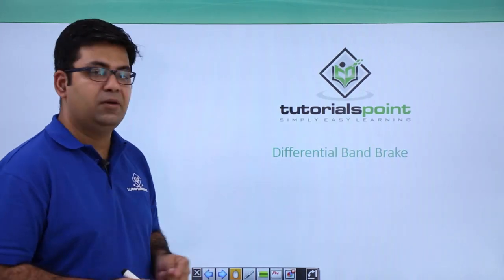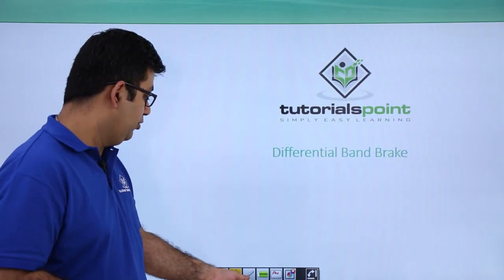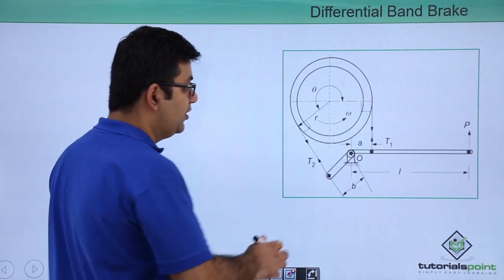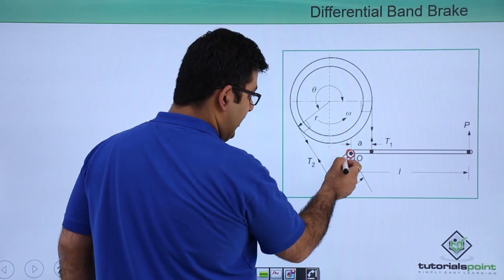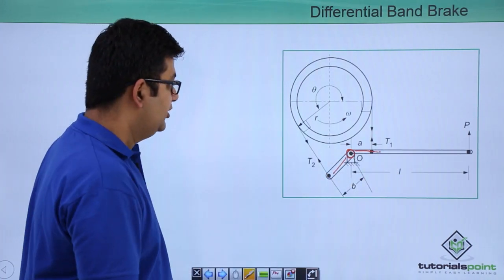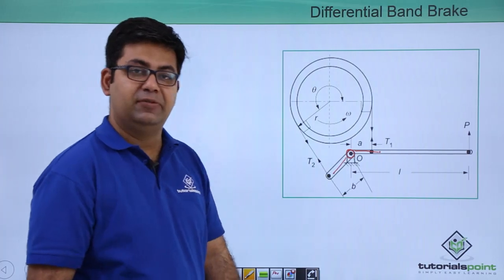Now let's talk about a differential band brake. If you look at a differential band brake, this is how it looks like. You have a fulcrum over here and you have two levers. So this is more of a bell crank lever arrangement.